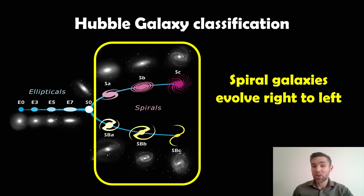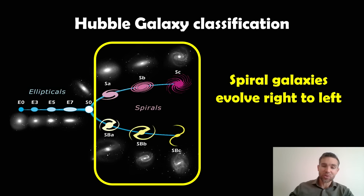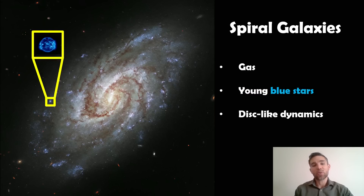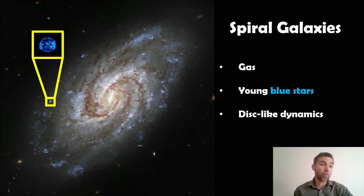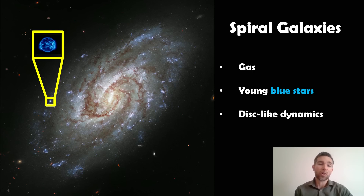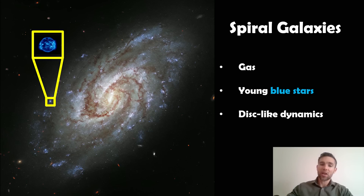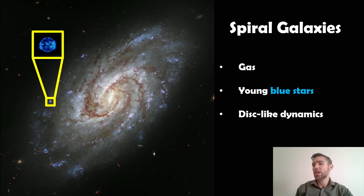Galaxies also reduce their gas content and get redder over time. Spirals are disc-like and have spiral arms — that's essentially why they're called spirals. Spiral galaxies have gas, which means they have star formation occurring, and because of that they have a population of younger blue stars. They have disc-like dynamics — they're flat like a disc and rotate with a net rotation.